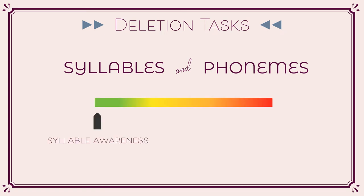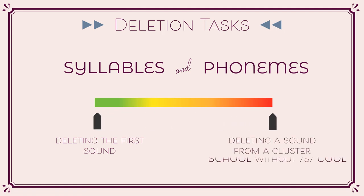Syllable awareness is easy. Deleting the first sound from a word is easier than deleting the last sound from a word. Deleting a sound from a cluster of sounds — for example, 'school' without the first sound, which is 's', is pronounced as 'cool' — is very difficult.